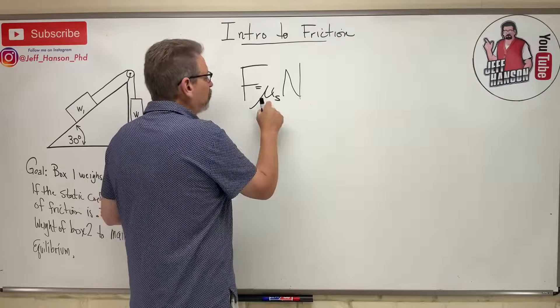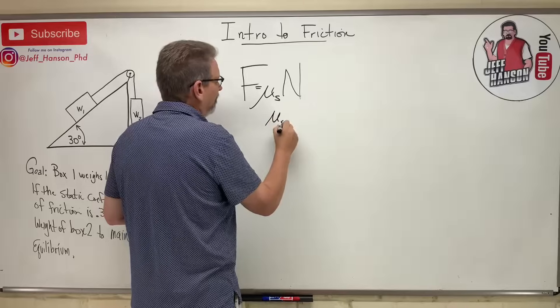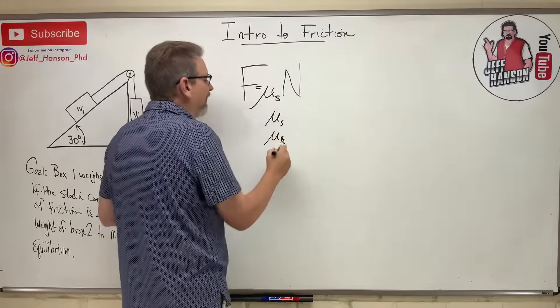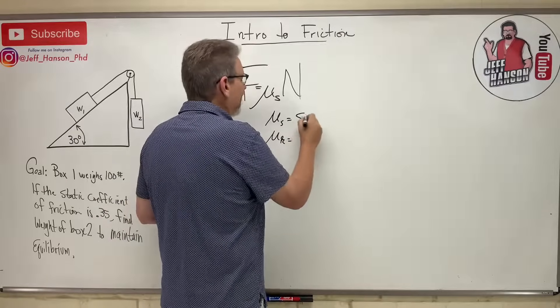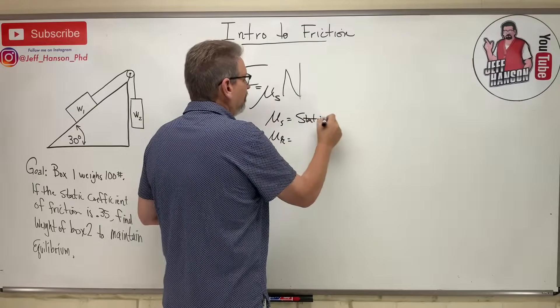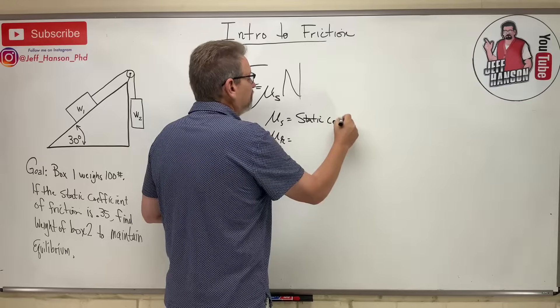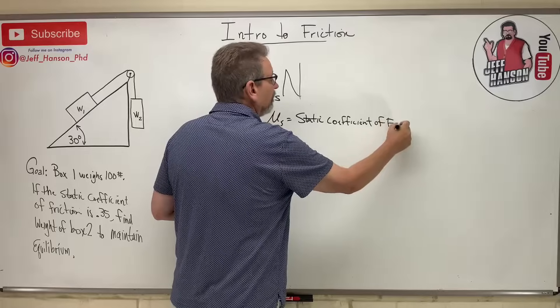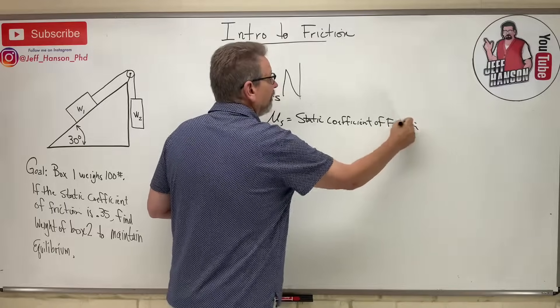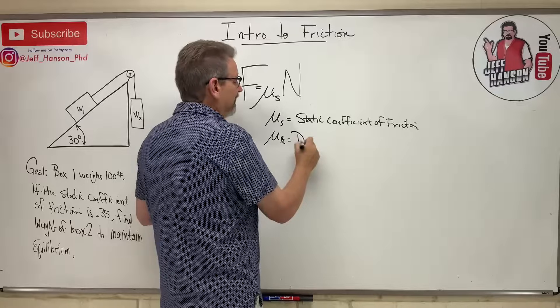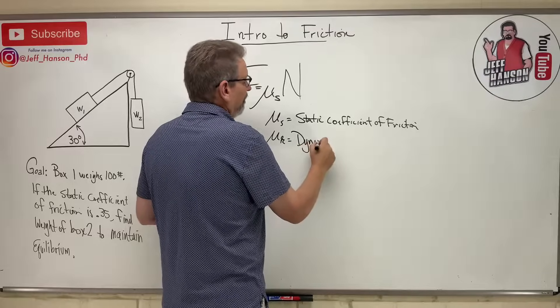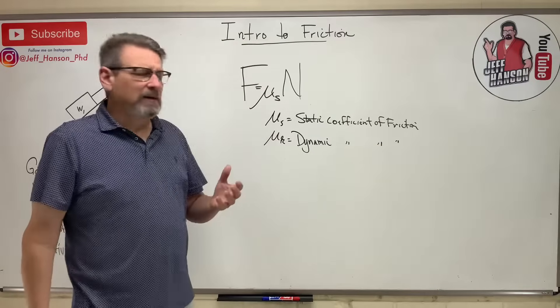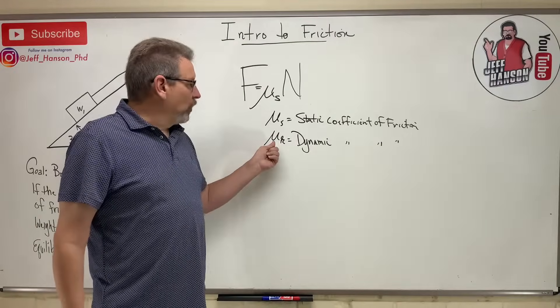So remember what this is, mu sub s. There's also a mu sub k. You'll see both of these in statics. Mu sub s is the static coefficient of friction. And mu sub k is the dynamic coefficient of friction. So let me tell you about what these kind of are.